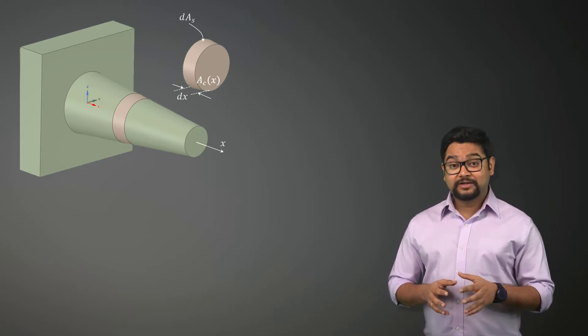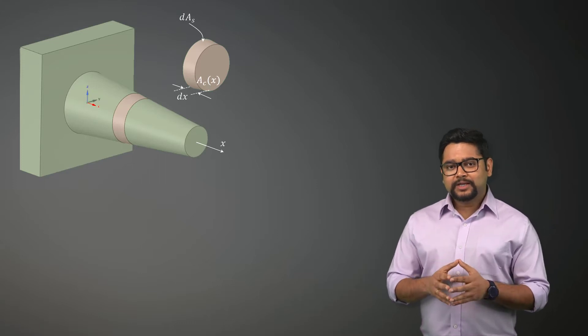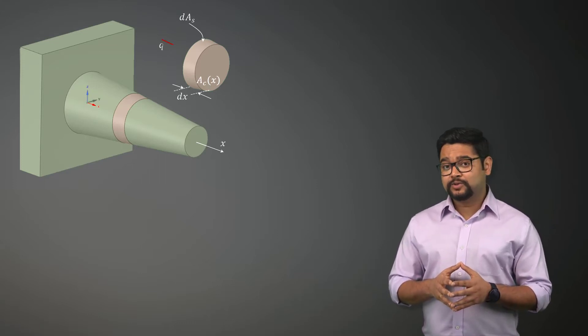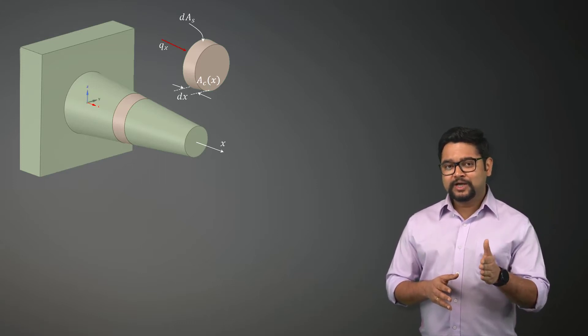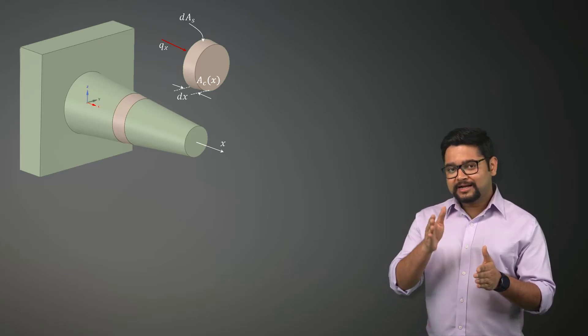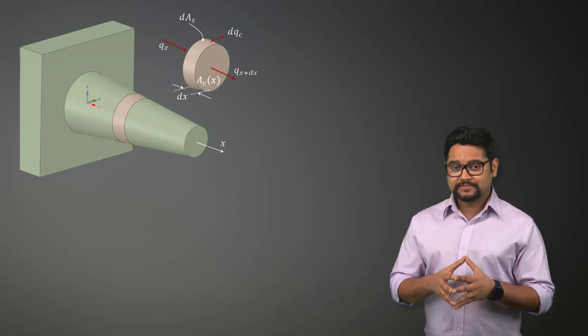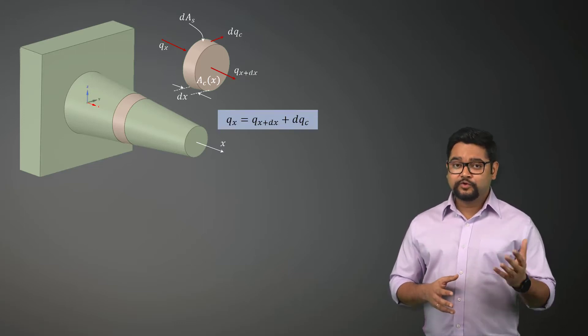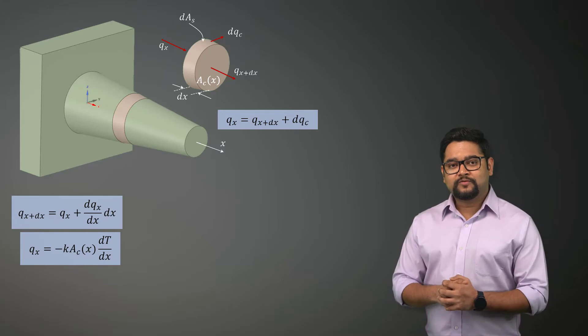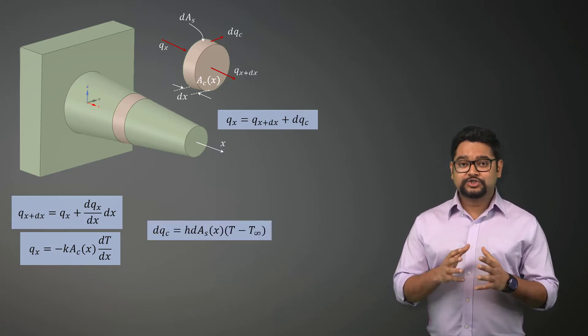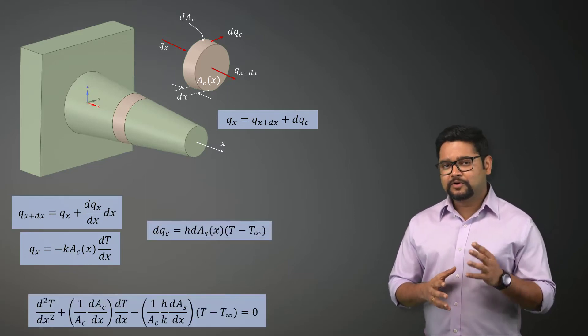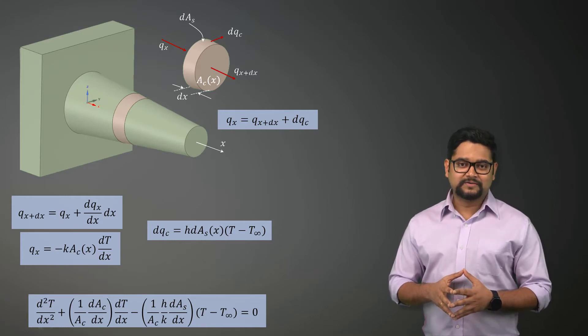Applying the conservation of energy to this slice, we can say that the heat conduction into the element at x is equal to the rate of heat conduction from the element at x plus dx and the rate of heat convection from the slice. Using Fourier's law and Newton's law of cooling, we get the following general form of heat transfer equation for a quasi 1D extended surface.